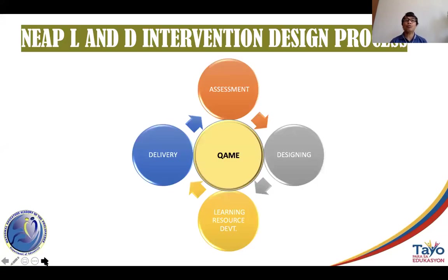Now we go to the NAYAP learning and development intervention design process. To capture those assumptions of the adult learner, it's important that the design process enables that kind of recognition. For NAYAP, it's important that we go through four basic processes supported by quality assurance and monitoring and evaluation.